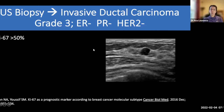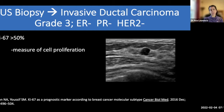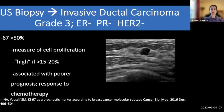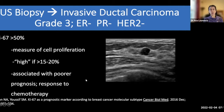The pathologist reported a KI-67 greater than 50%. KI-67 is a measure of cell proliferation, and when it's high — greater than 15 to 20% — it's associated with higher-grade cancers which unfortunately have a poor prognosis. The silver lining is that cancers with a high KI-67 index respond pretty well to chemotherapy, the way most high-grade cancers often do.